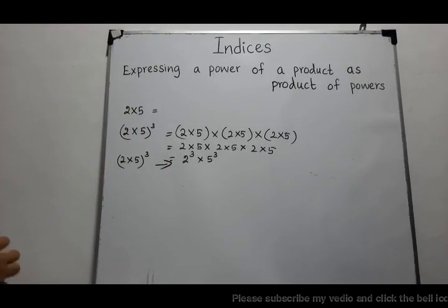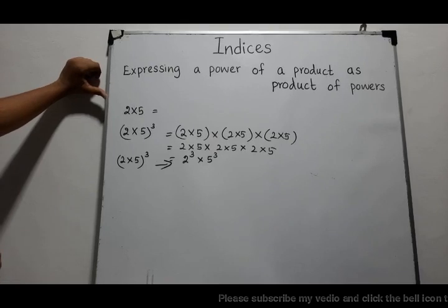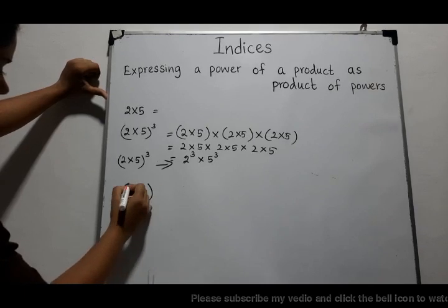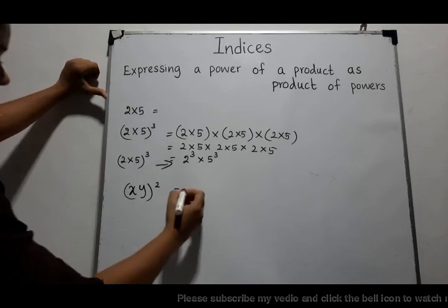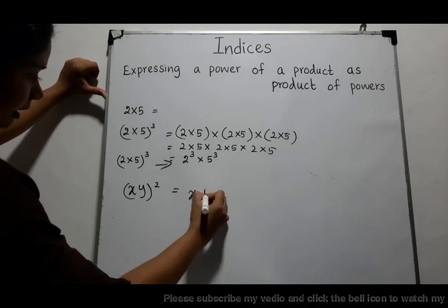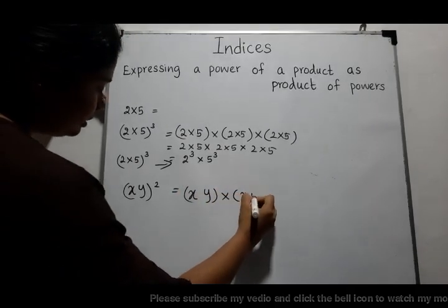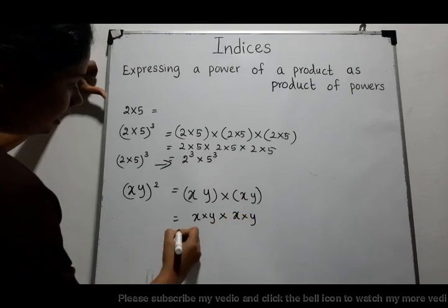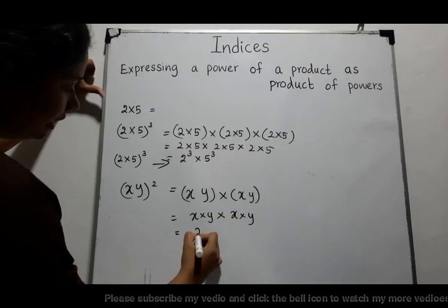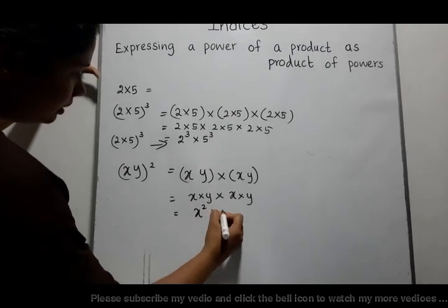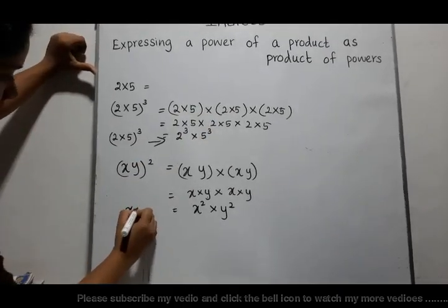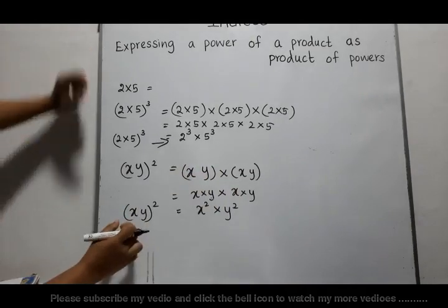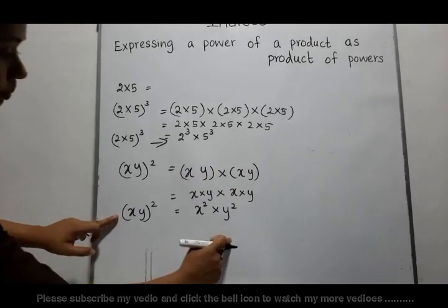Now let us consider a power of a product containing algebraic terms. For (xy)², we expand it as (x·y)(x·y), which gives x·y·x·y. Here x is multiplied twice, so x to the power 2, and y is multiplied twice, so y to the power 2. Therefore (xy)² can be written as x² · y². The left side is a power of a product and the right side is a product of powers.